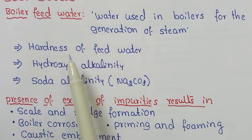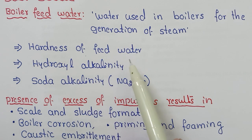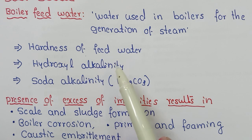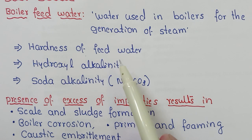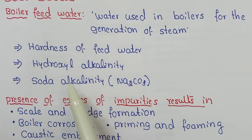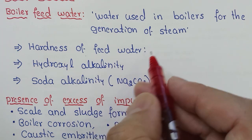The water fed to the boiler contains many impurities. It is necessary to eliminate the impurities that cause serious operational troubles in boilers before supplying water into them. Boiler feed water should contain the following parameters within limits: hardness of feed water, hydroxyl alkalinity, and soda alkalinity. Hardness means the property of water to resist lather formation — hard water does not give lather with soap.